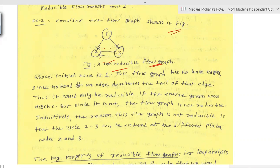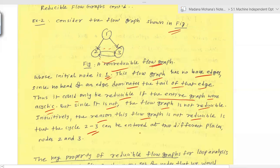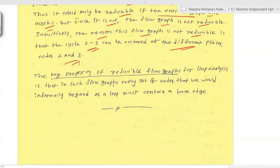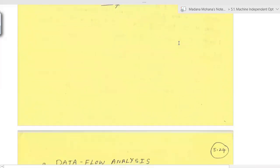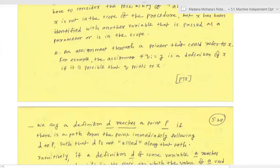That non-reducible flow graph has no back edges since no head dominates the tail of any edge. It could only be reducible if it were acyclic, but since it is not acyclic it is not reducible. The cycle 2→3 can be entered at two different places, nodes 2 and 3. The key property of reducible flow graphs is that every set of nodes regarded as a loop must contain a back edge.